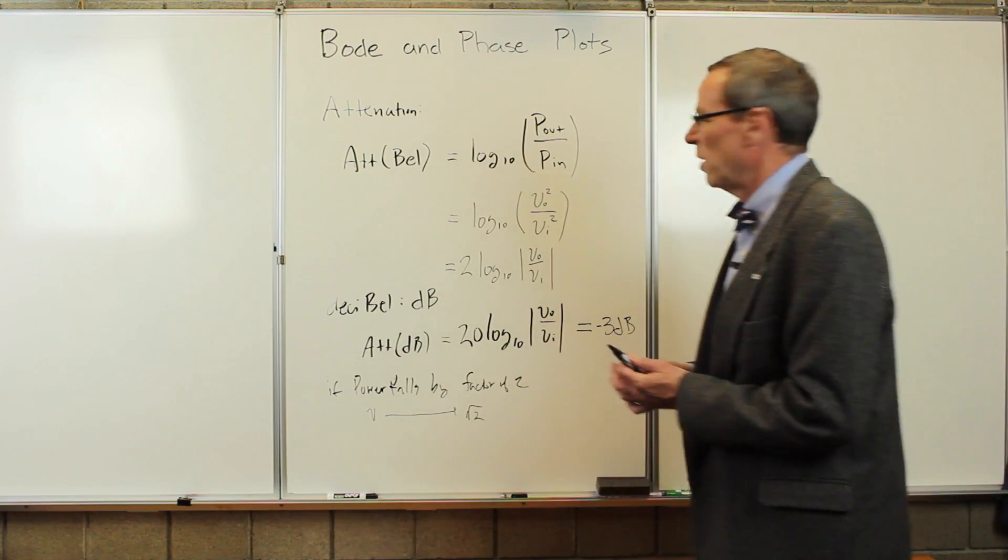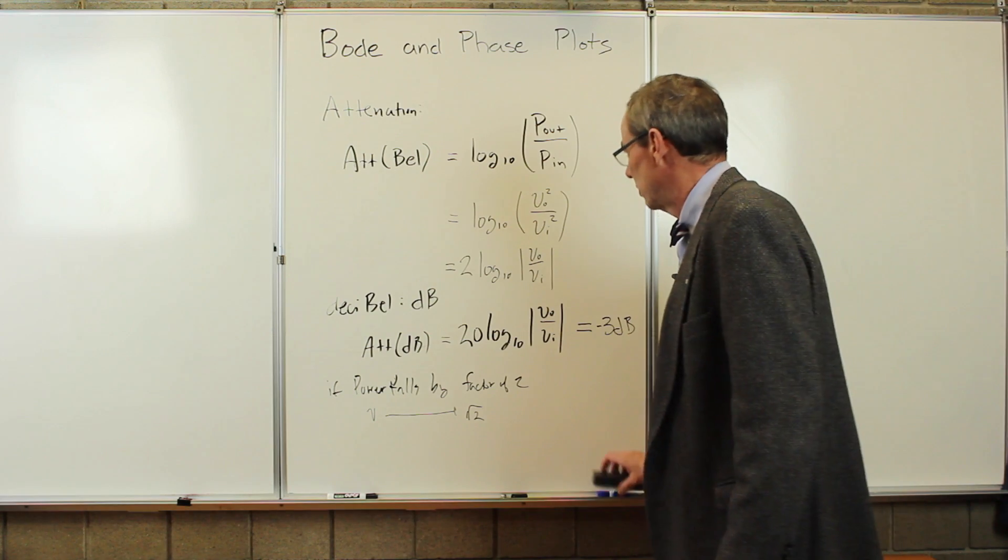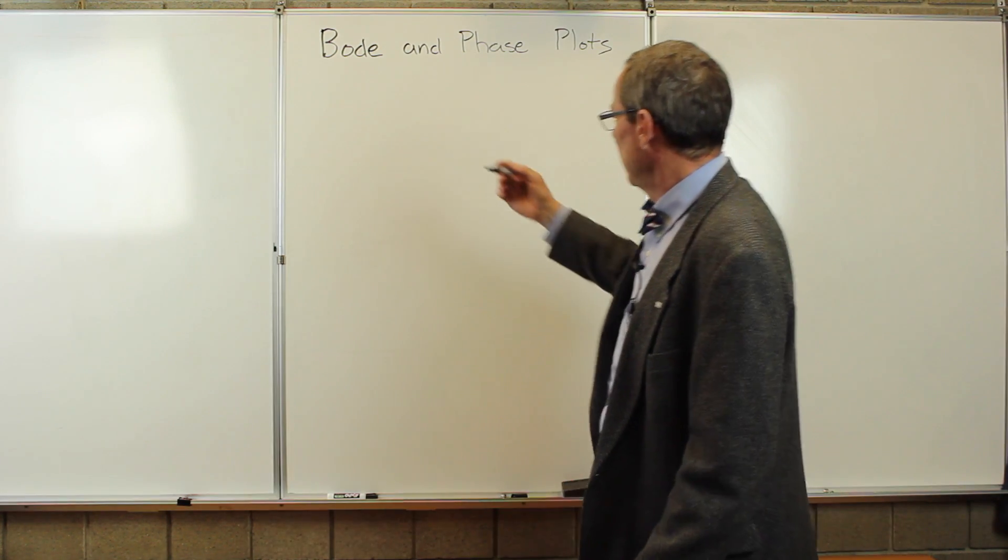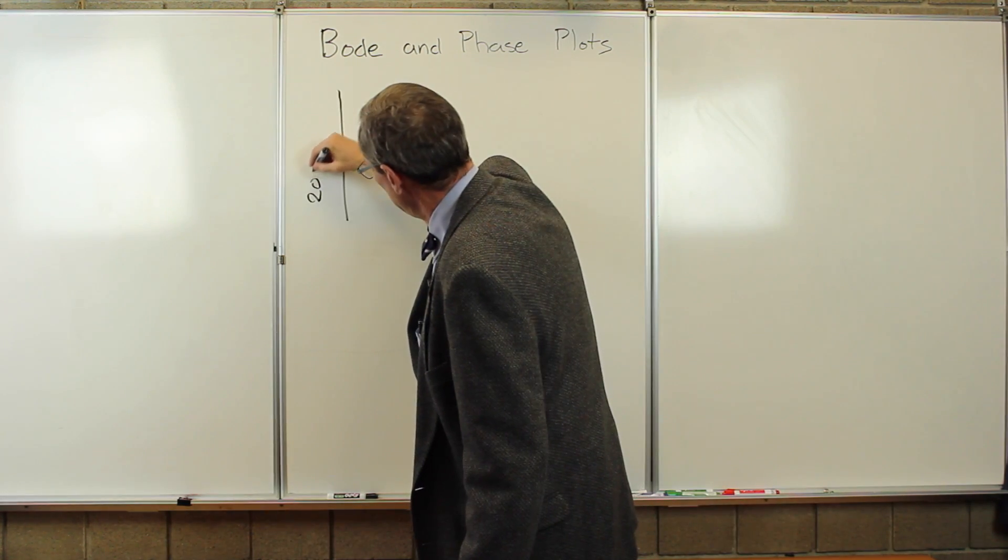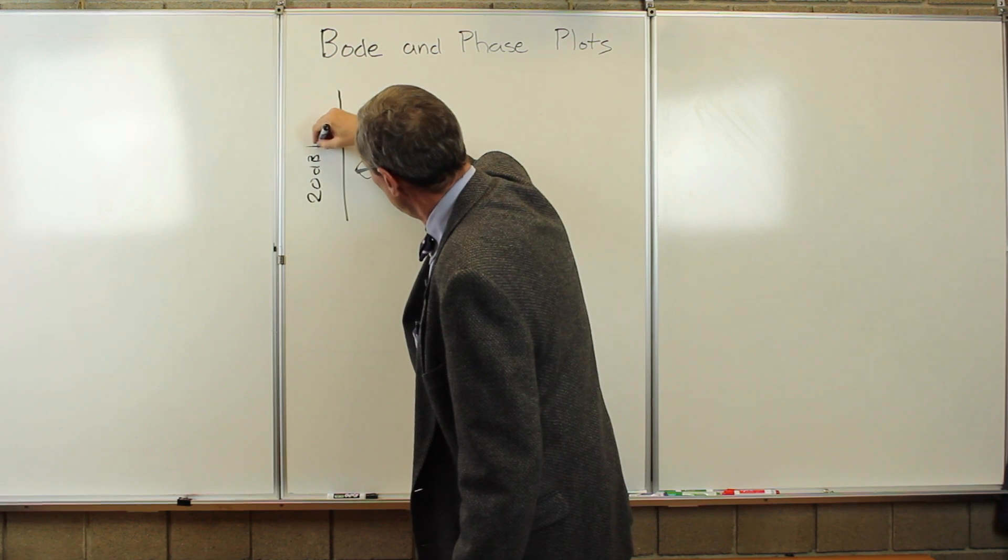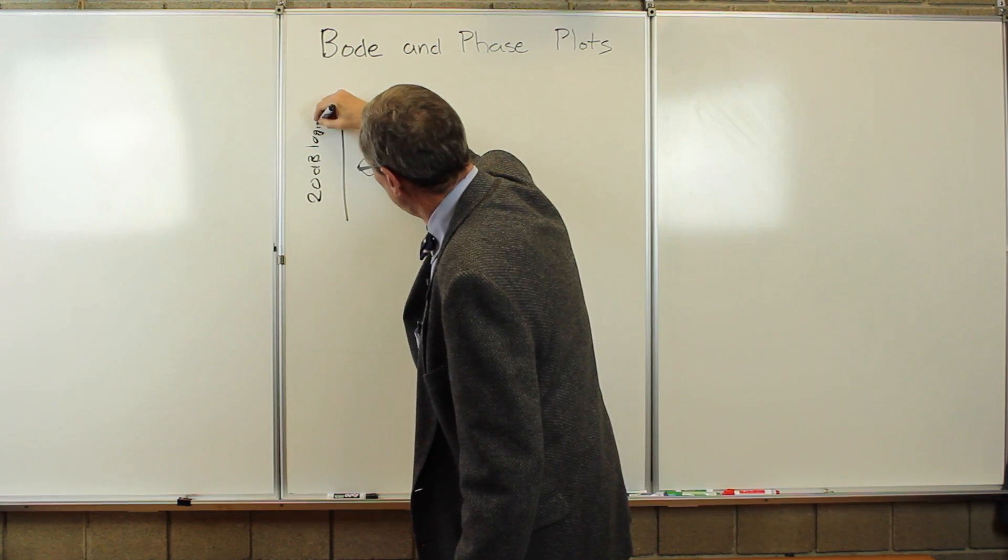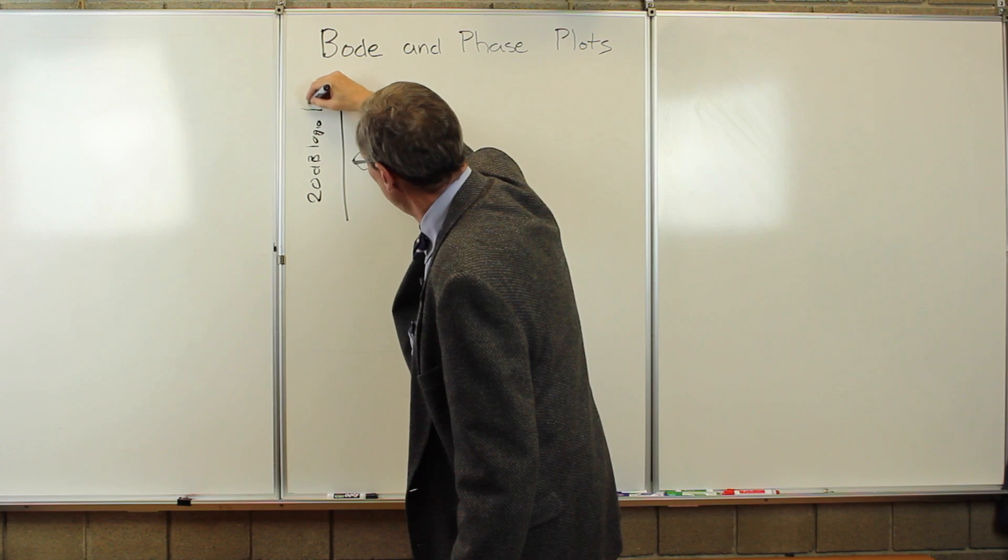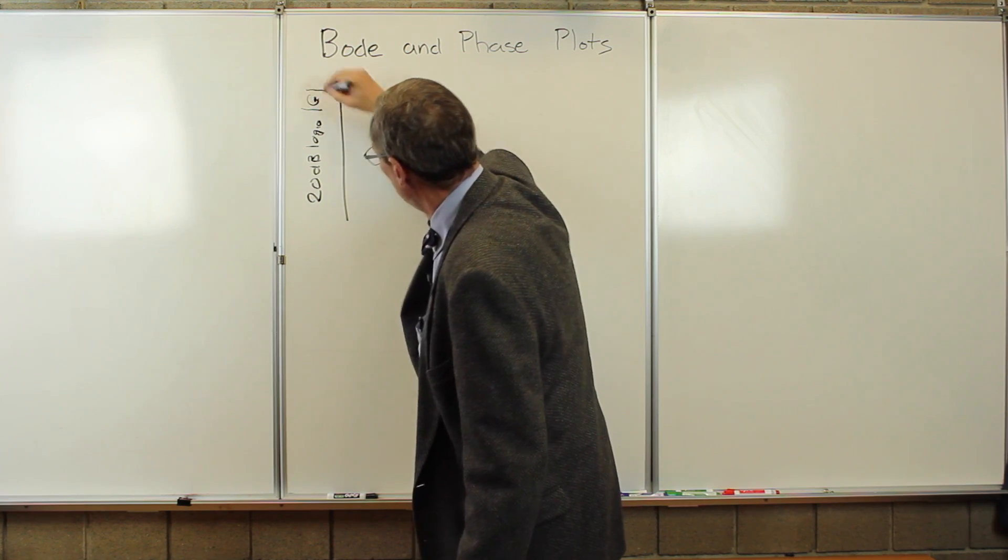So now let's look at what a Bode plot and a phase plot looks like. So we said a Bode plot is twenty dB log ten. It's the ratio of v_out to v_in, which is the gain. So it's log ten of the gain.